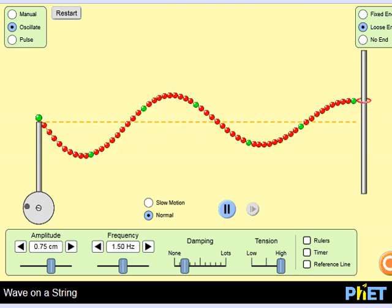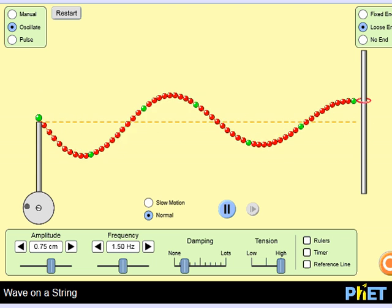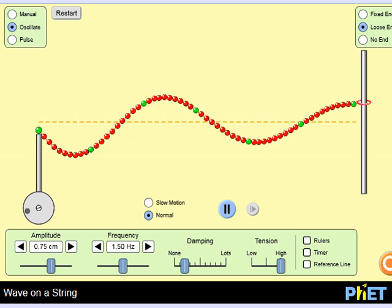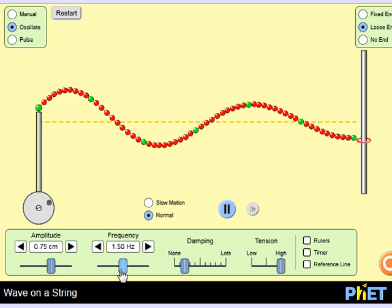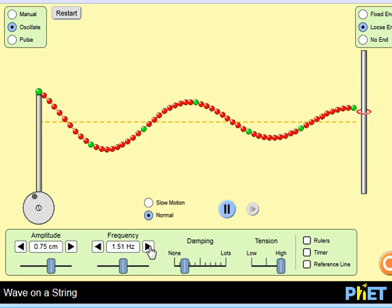Using a wave simulator, such as the one on the PhET website, we can change amplitude and frequency. So if we wanted to increase the number of waves happening per second, we increase the frequency.